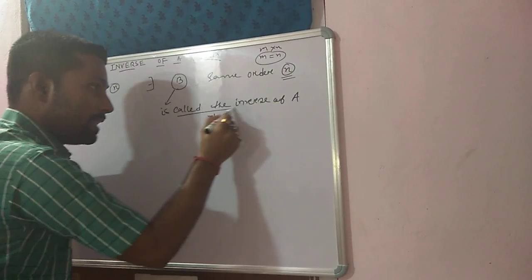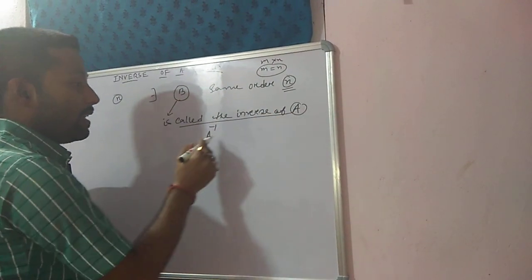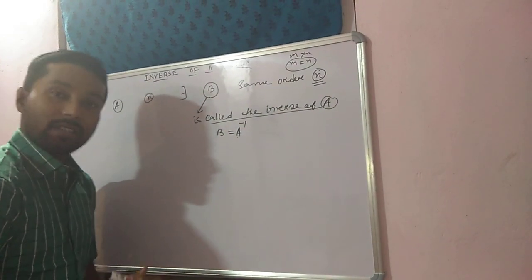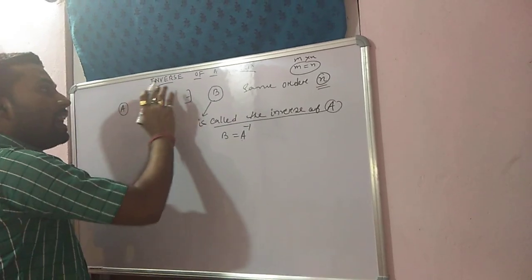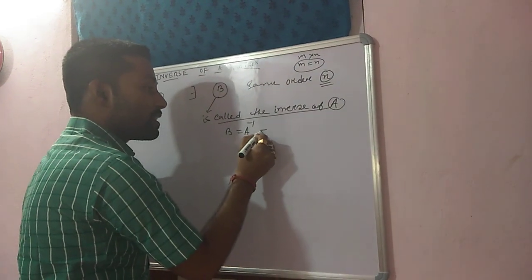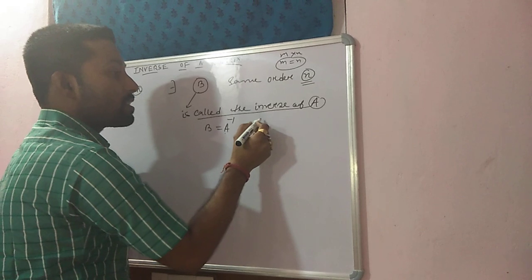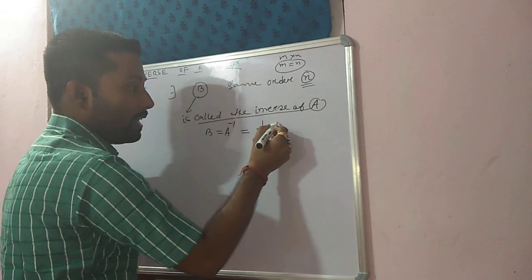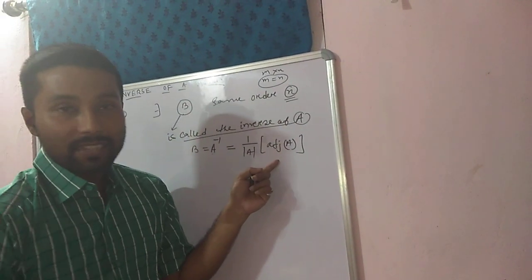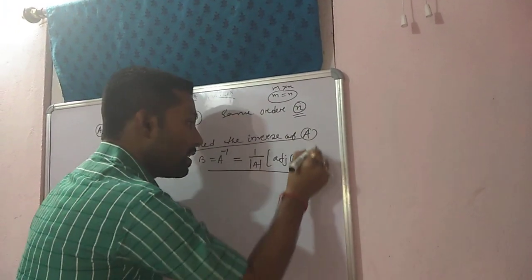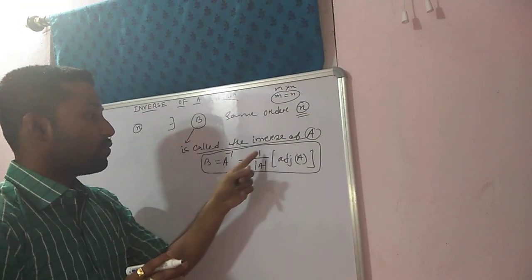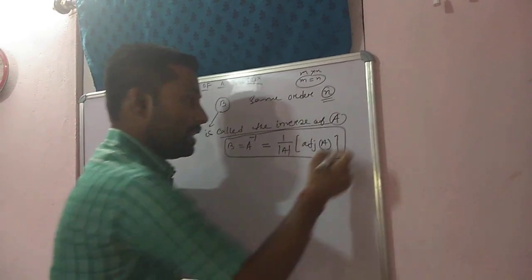This matrix B is called the inverse of A, which is denoted by A inverse. So that means we can write B is equal to A inverse. Now, to find the inverse of a matrix, we have to use this formula: B equal to A inverse is equal to 1 by determinant of A into adjoint of A. Already I have discussed about adjoint. By using this formula, we can find the inverse of a matrix. That is, 1 by determinant of A into adjoint of A. This is the important formula.